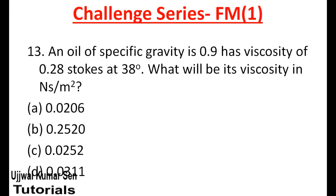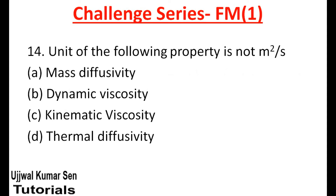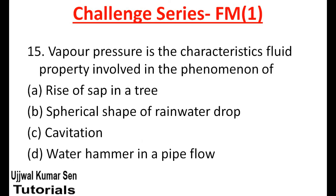Twelfth question: the phenomenon of cavitation — the fluid property involved is vapor pressure, viscosity, surface tension, or bulk modulus of elasticity? An oil of specific gravity 0.9 has a viscosity of 0.28 strokes at 38 degrees centigrade — what will be its viscosity in Newton second per meter square? The property with unit meter square per second is: mass diffusivity, dynamic viscosity, kinematic viscosity, or thermal diffusivity? Which fluid property is involved in the rise of sap in a tree, spherical shape of a rain water drop, cavitation, and water hammer in pipe flow?